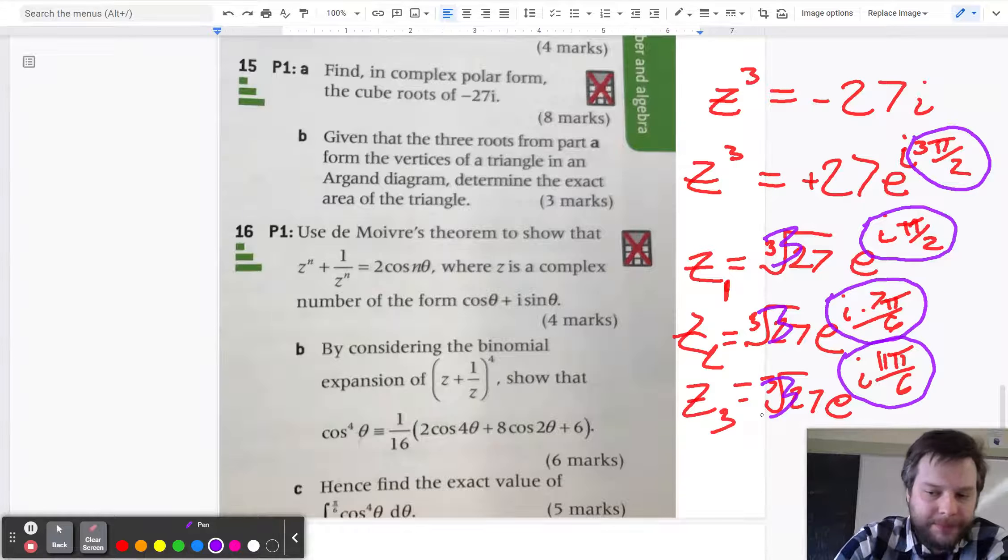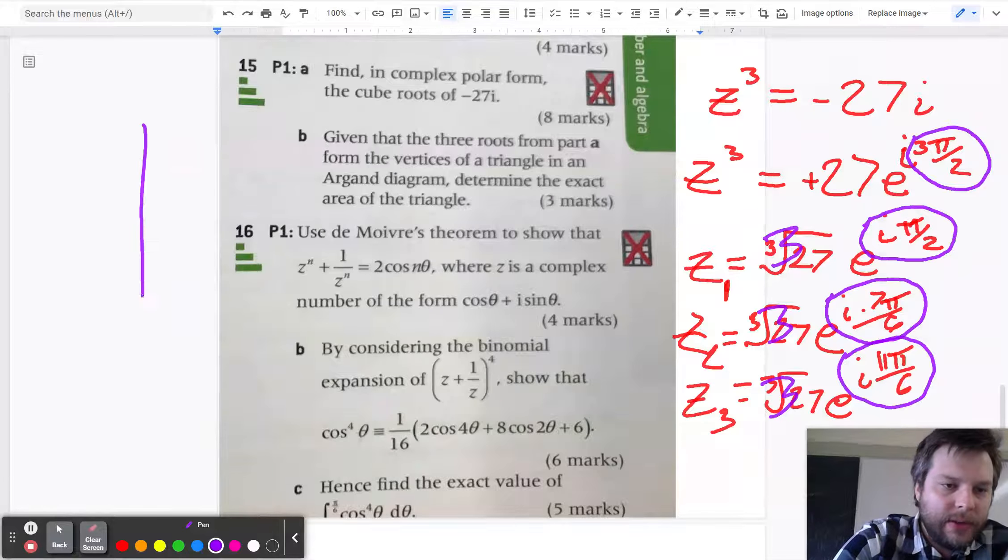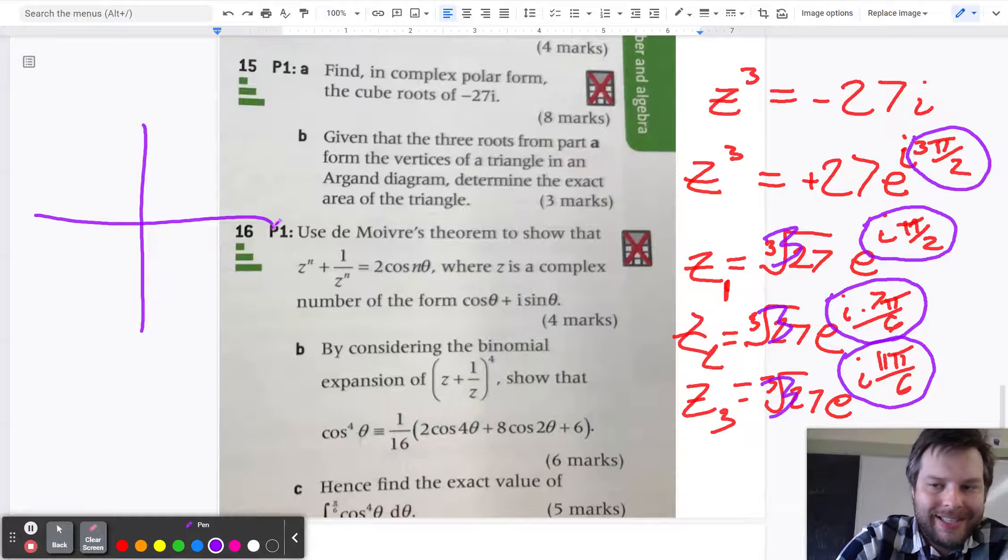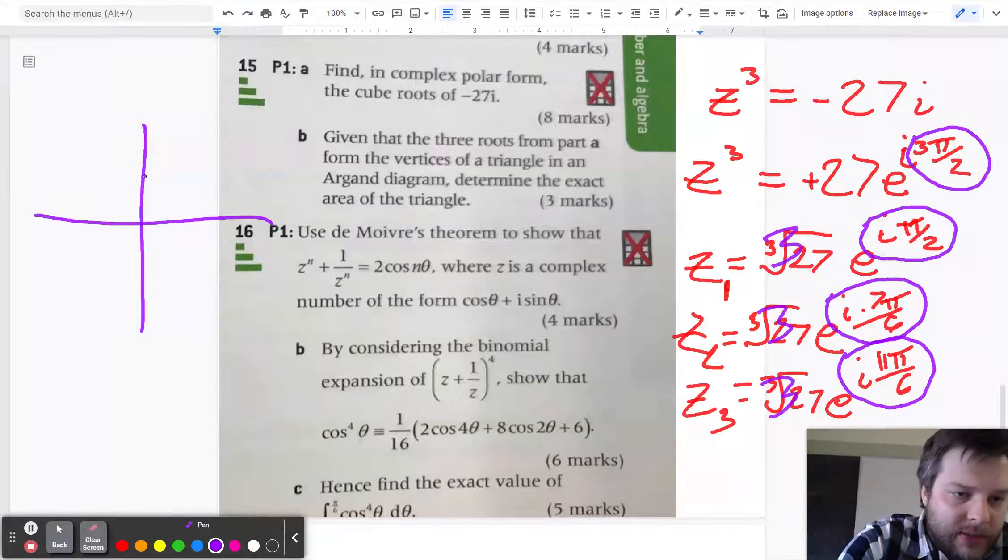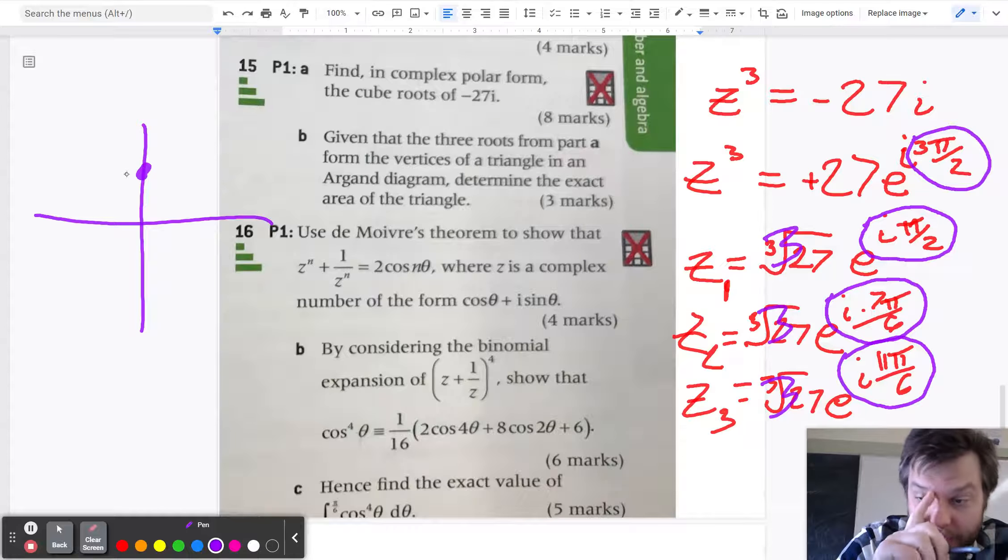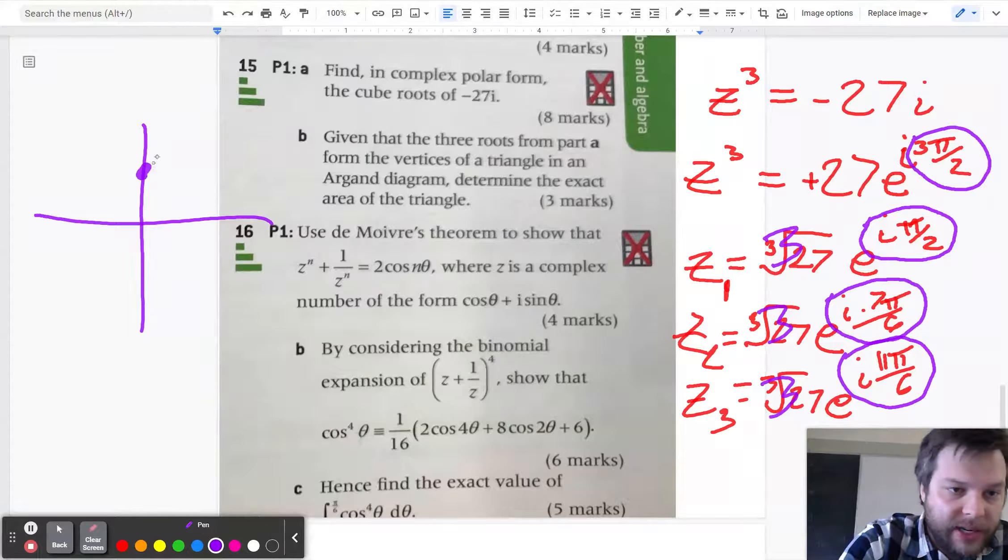So part B, draw it out. It says, given that the 3 roots form the vertices of a triangle in an Argand diagram, determine the exact area of the triangle. So Z1 is right about here because it has an angle of pi over 2 and a radius of 3.